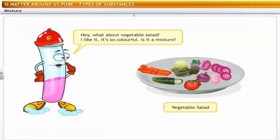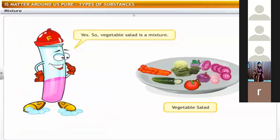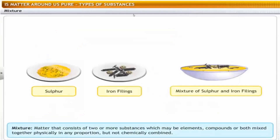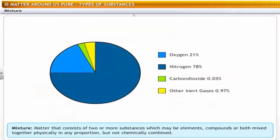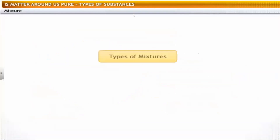Vegetable salad is a mixture — it contains a variety of vegetables like carrot, cucumber, beetroot, tomato, cabbage and onion that can be segregated from one another. A mixture is matter that consists of two or more substances — which may be elements, compounds or both — mixed together physically in any proportion but not chemically combined. For example, air is a mixture of gases like oxygen, nitrogen and carbon dioxide that are not chemically combined and can be separated by suitable means.